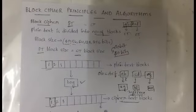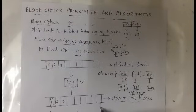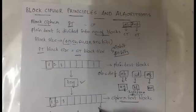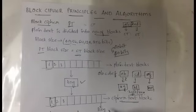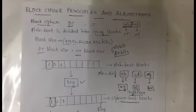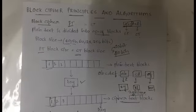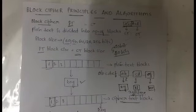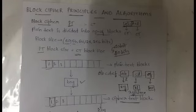After generating the cipher text, it will be sent to the receiver side. On the receiver side, the receiver will use their key to regenerate the corresponding plain text. The plain text will again be in the form of blocks; the receiver will combine all the blocks and retrieve the actual message. This is what happens in the case of block cipher.